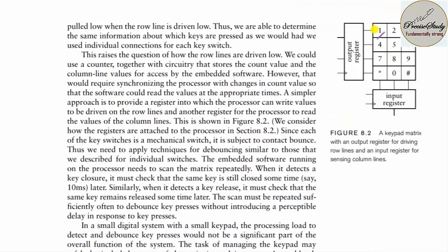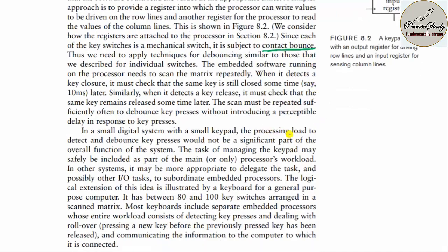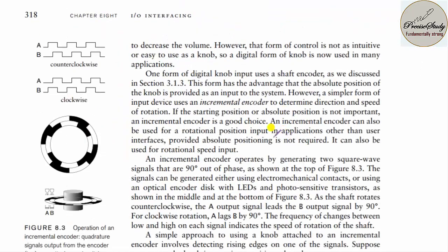How does the microcontroller judge which key has been pressed? It repeatedly scans using row scan and column scan. With row and column scanning, it can determine which key was pressed. This also involves the switch bouncing effect, or contact bounce effect, to judge which key has been pressed and take the appropriate action.